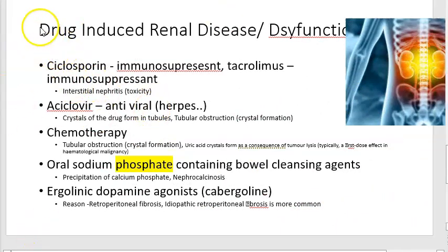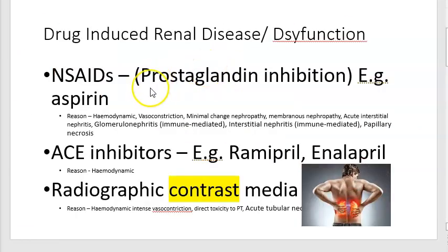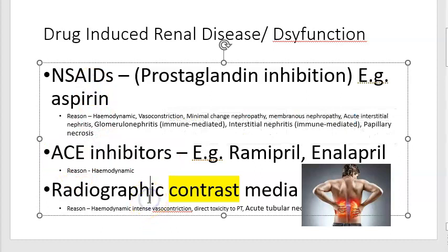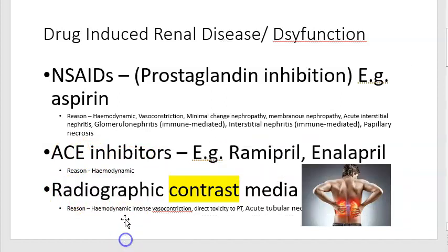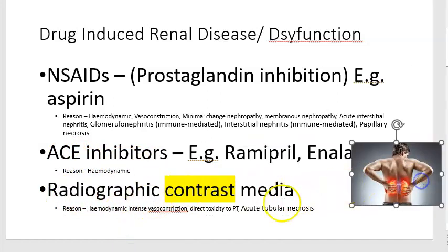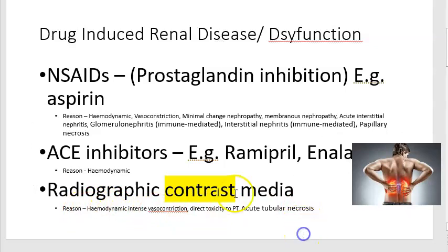Now for a recap: NSAIDs work by prostaglandin inhibition and reduce blood flow to the kidney — examples include aspirin. ACE inhibitors cause renal hypoperfusion — examples are ramipril and enalapril, used for high blood pressure. Radiographic contrast media, used in X-ray, CT, and MRI imaging, causes intense vasoconstriction and tubular necrosis, harming the kidney.